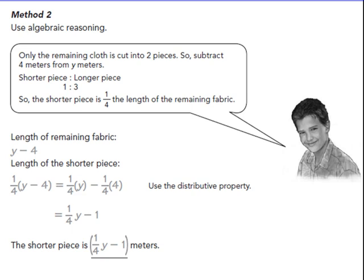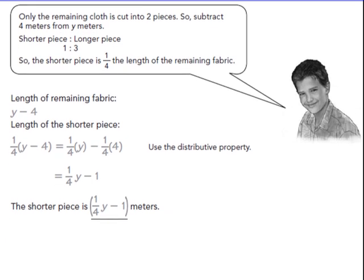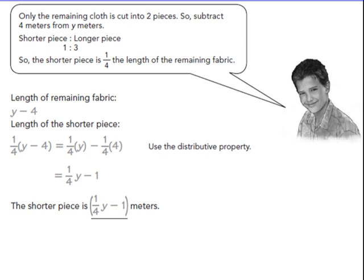The other way you can do it is just doing it by algebra, not drawing it all out. However, I think that drawing really helps solve that. Only the remaining cloth is cut into the two pieces in the ratio of 1 to 3. So the shorter piece is 1/4 of what's remaining. So 1/4 times Y and 1/4 times negative 4 gives you 1/4Y minus 1 meters.